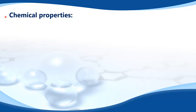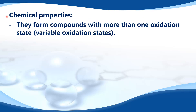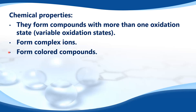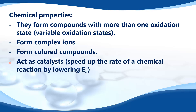Next we look at the chemical properties of transition metals. They form compounds with more than one oxidation state — they have variable oxidation states. They form complex ions. They form colored compounds. They act as catalysts — they speed up the rate of a chemical reaction by lowering the activation energy.